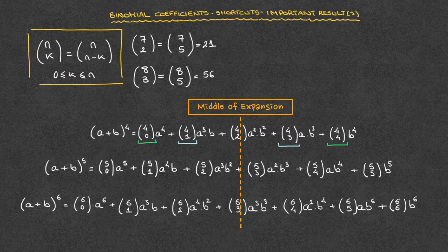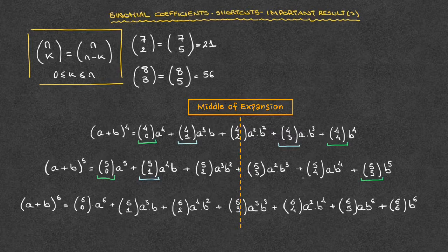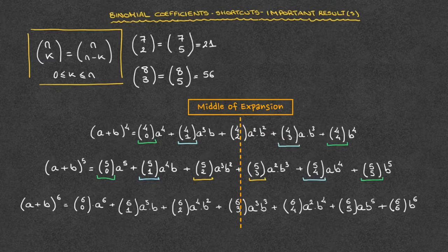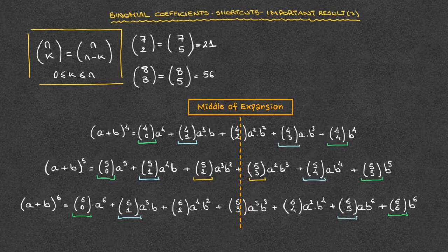The same applies to the other expansions. For n=5: 5 choose 0 equals 5 choose 5; 5 choose 1 equals 5 choose 4; and 5 choose 2 equals 5 choose 3. For the n=6 expansion: 6 choose 0 equals 6 choose 6; 6 choose 1 equals 6 choose 5; and 6 choose 2 equals 6 choose 4. So thanks to this result we'll often end up with just half of the binomial coefficients to calculate.